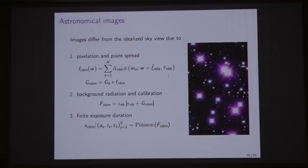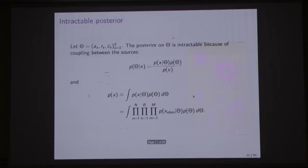Finally we have this Poisson modeling that accounts for the finite exposure duration - the fact that if the sky is not changing but you look at it twice, you don't expect to see exactly the same number of photons. So that's the model.